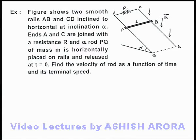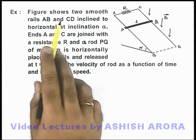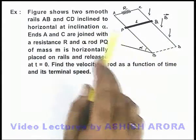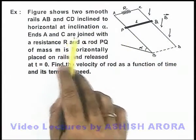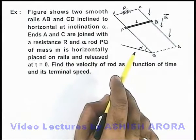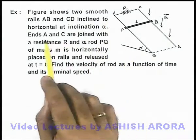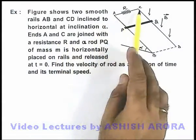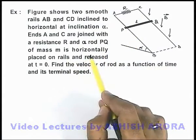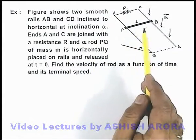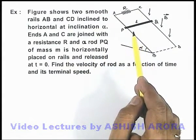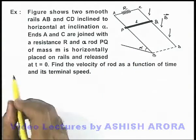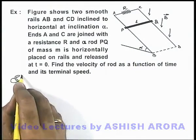In this example, we are given that the figure shows two smooth rails AB and CD which are inclined to horizontal at an inclination alpha. The ends A and C are joined with the resistance R, and a rod PQ of mass m is horizontally placed on the rails and released at t equal to zero. We are required to find the velocity of the rod as a function of time.